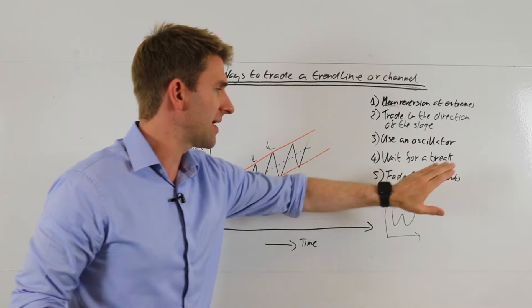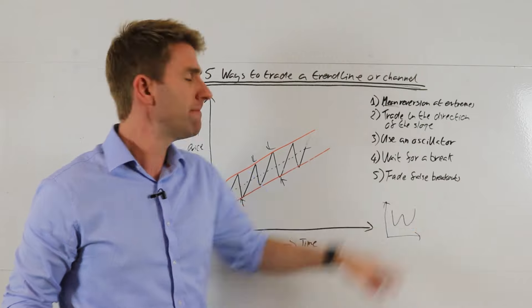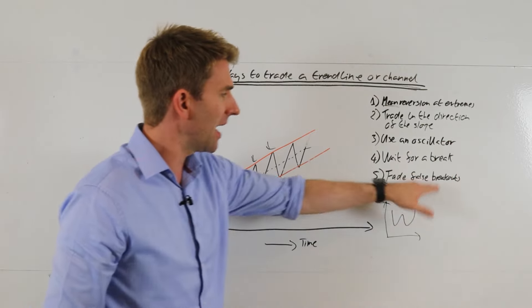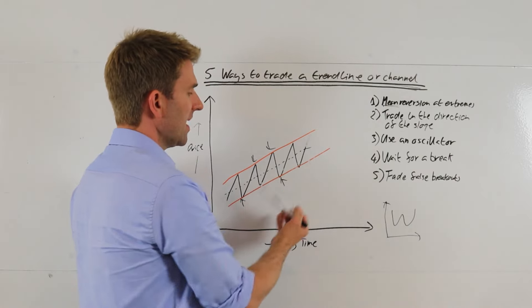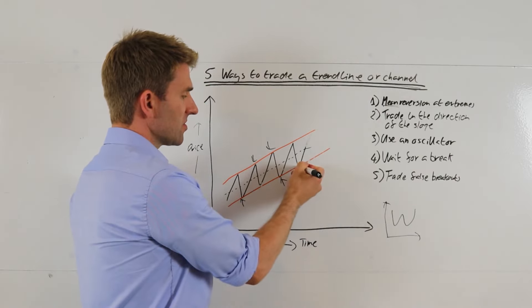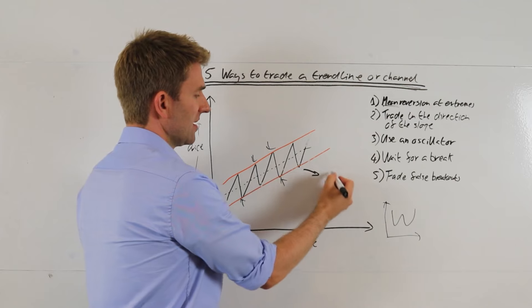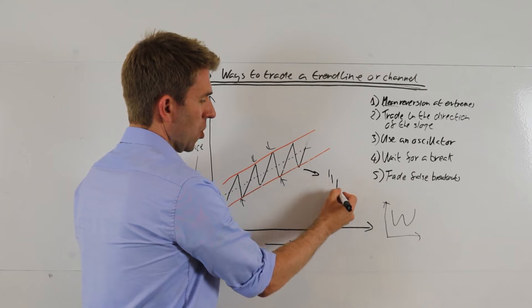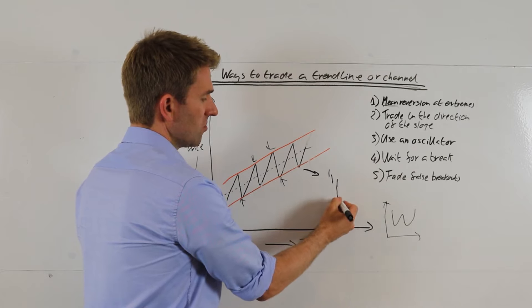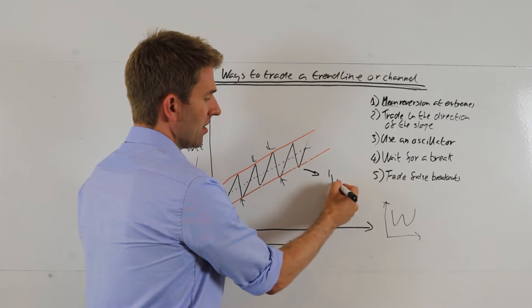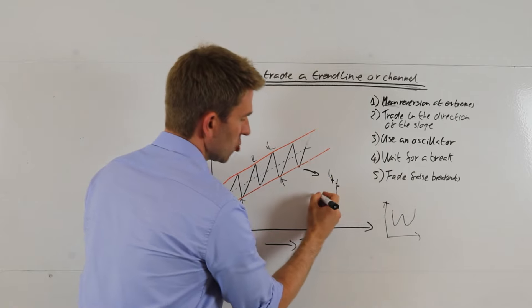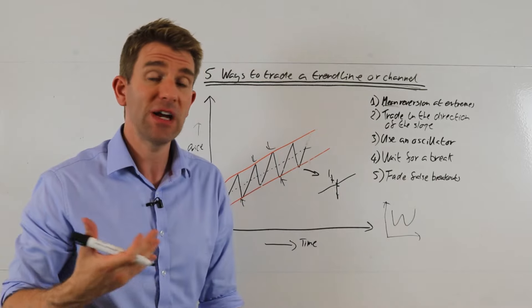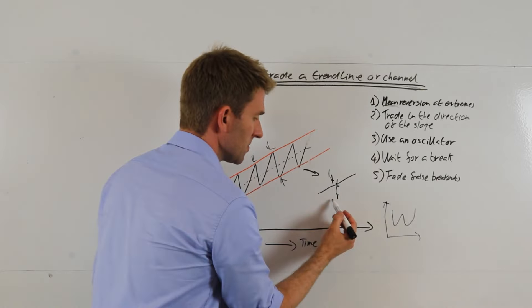Number five is a fade to false breakouts. This is probably my preferred way if I'm honest. I trade it along with trading in direction of the slope. I like these false breakouts because very often, especially on the daily chart, you'll get a fade to the downside and let's imagine this looks like this. So you're going to get your kind of bars here, comes to the downside, you might then get a long bar that goes through and then comes back up and kind of closes like this, and the trend line is running like this.